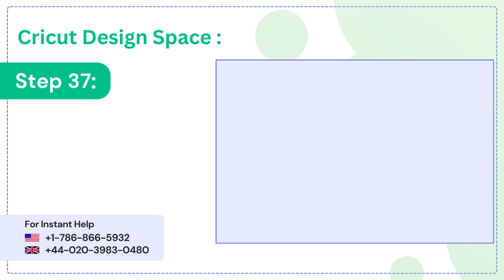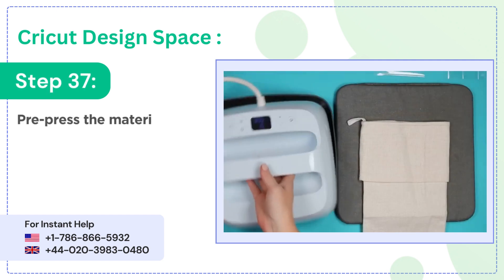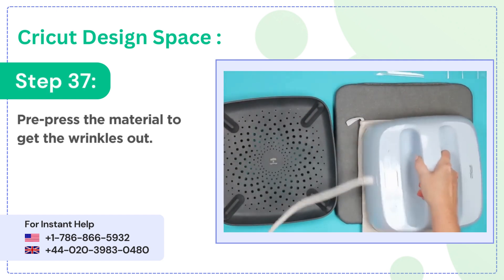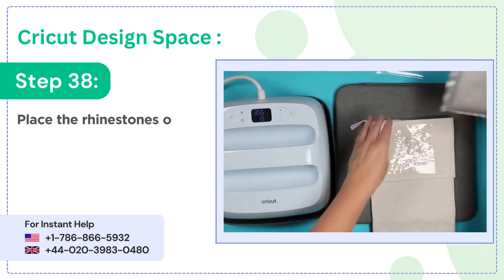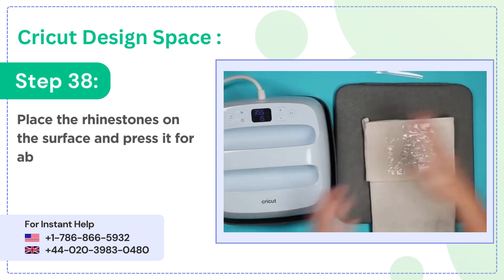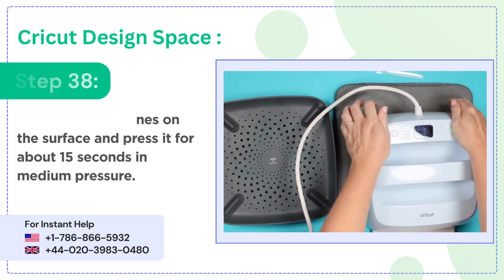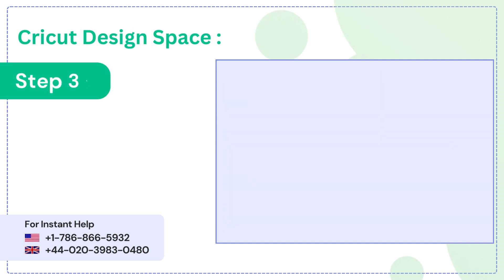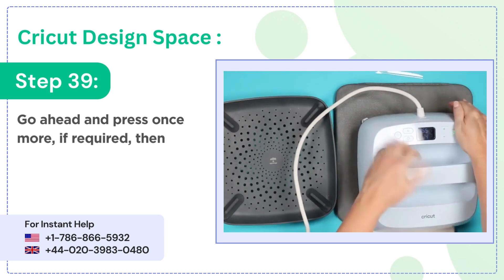Step 37: pre-press the material to get the wrinkles out. Step 38: place the rhinestones on the surface and press it for about 15 seconds at medium pressure. Step 39: go ahead and press once more if required, then peel off the transfer mask.